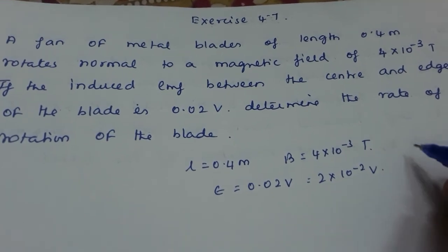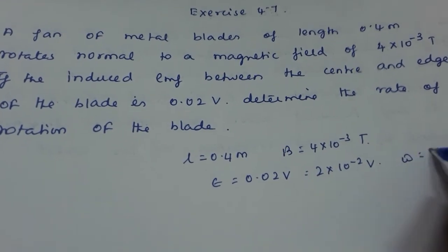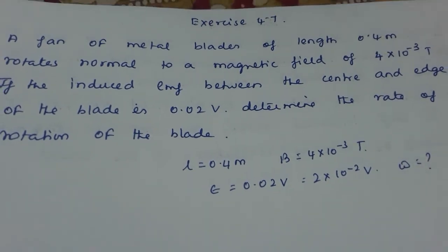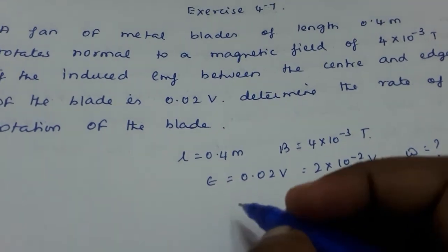This can be written as 2 into 10 raised to minus 2 volt. We need to determine the rate of rotation of the blade, that is omega. Here it is angular rotation.